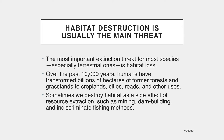The most important extinction threat for most species, especially terrestrial ones, is habitat loss. Perhaps the most obvious example of habitat destruction is conversion of forests and grasslands to farmland. Over the past 10,000 years, humans have transformed billions of hectares of former forests and grasslands to croplands, cities, roads, and other uses. These human-dominated spaces aren't devoid of wild organisms, but they generally favor weedy species adapted to coexist with us.